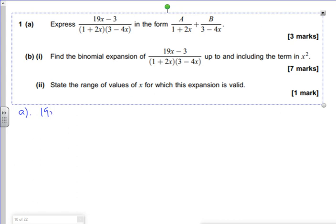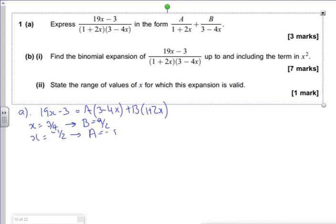So the first part, if I assume that you're happy that it's A lots of 3 minus 4x and B lots of 1 plus 2x, and if I use x is 3 quarters, that would get rid of A and find out B, which from the completed one was 9 over 2. And if I use x is minus a half there, that would get rid of B, which finds A out as minus 5 over 2.